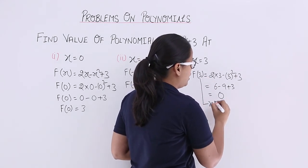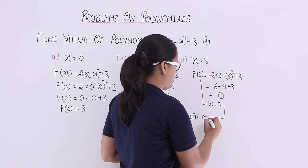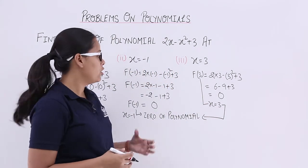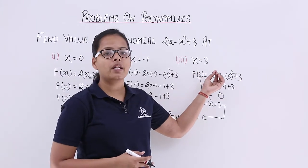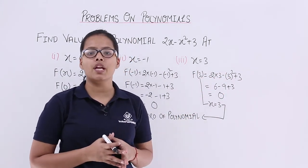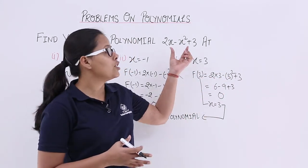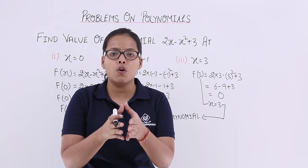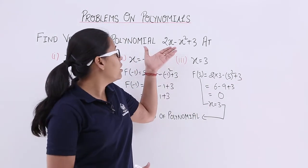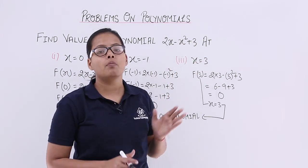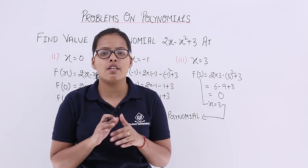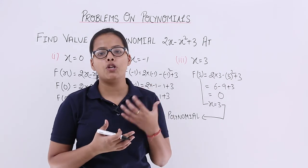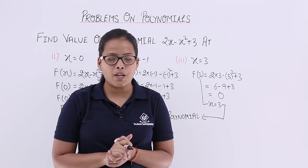So x = -1 as well as x = 3 are both zeros of this polynomial, because at both of these values the polynomial 2x - x² + 3 becomes 0. I will take more problems based on polynomials in the next video. Thank you.